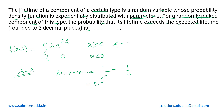We need to determine the probability of a component whose lifetime exceeds the average expected lifetime, which means we want the probability of X greater than 0.5. For such cases of exponential distribution, we need to make use of integration in order to find the probability.